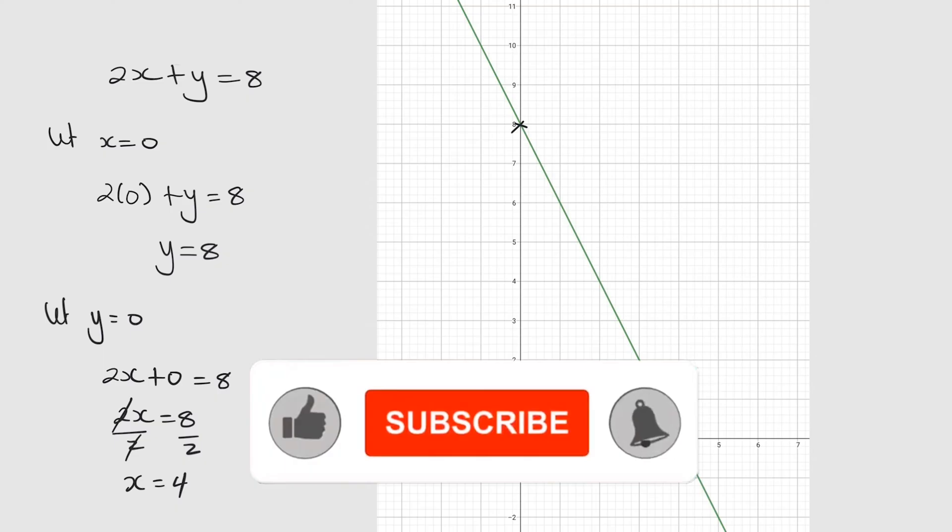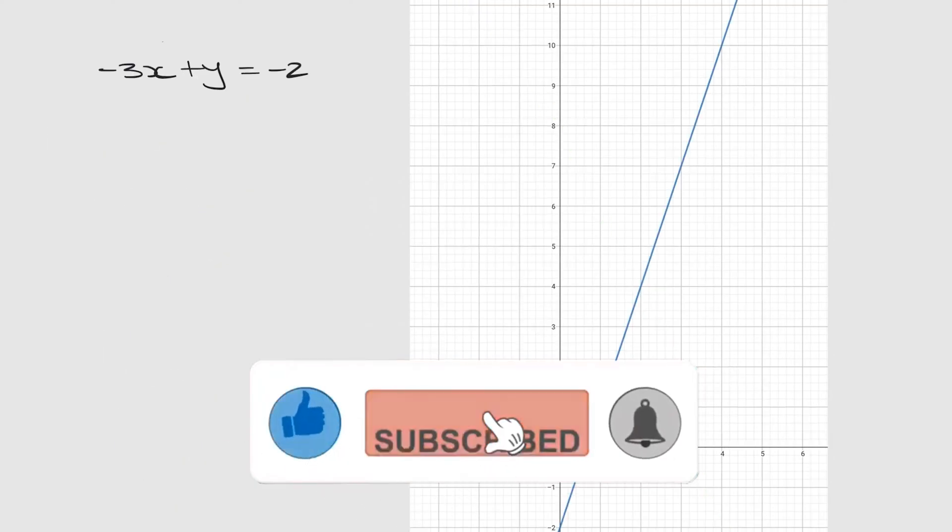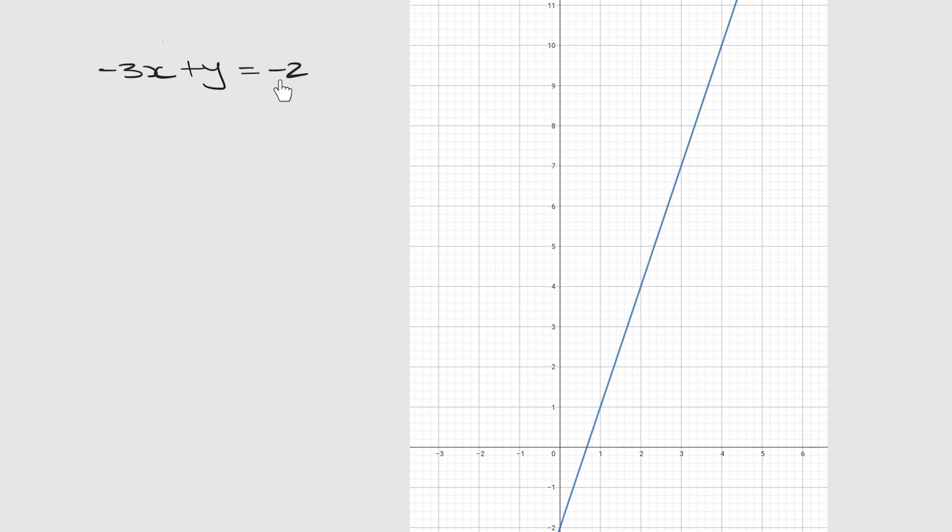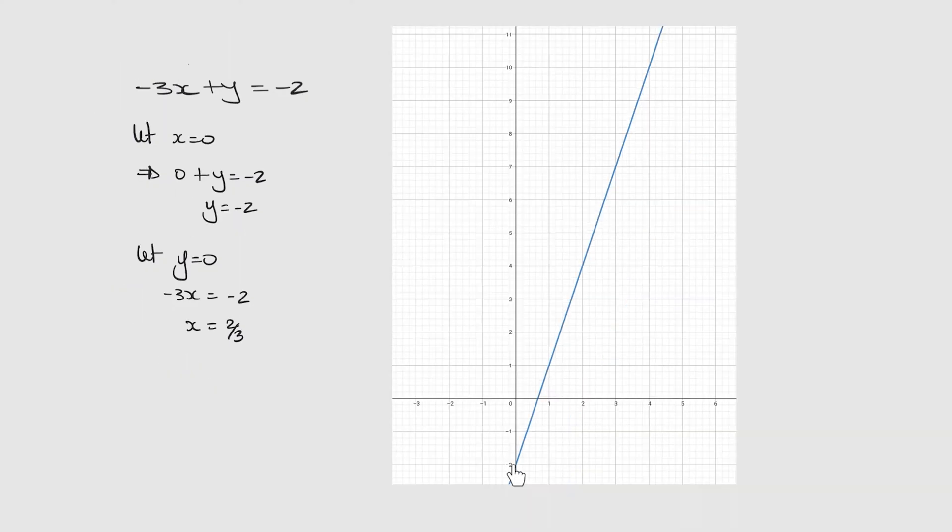Now I'm going to do the same thing for the second line. The second line was minus 3x plus y is equal to minus 2. I'm not going to go through what I've just done, but you can do the same thing. So here are the answers after you say let y and x equal 0. Let x equal 0 means that you're going to have 0 here. Y is going to be minus 2, which makes sense because you can see it crosses there at minus 2.